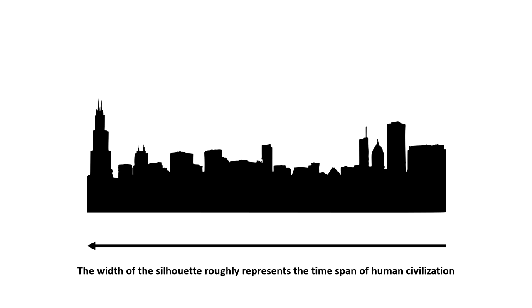The length from one side of the graphic of Chicago to the other side is going to represent the time span during which humans have accomplished everything that they've accomplished — all of human history, civilizations that have come and gone. All of that is going to be represented in this arrow.